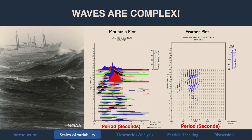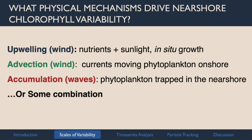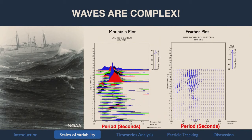This is called a mountain plot. On the y-axis we have the day of the month — this is for May 2009 — and each little mountain is proportional to energy density. The long-period stuff is on the left and short-period stuff on the right. We can see periods of some energy in long-period swell, and then a storm comes in with both swell and wind energy. You can also plot the same thing as feather plots, showing energy as the magnitude of arrows with direction corresponding to the directional spectrum.